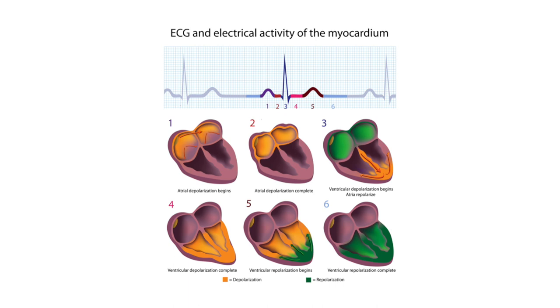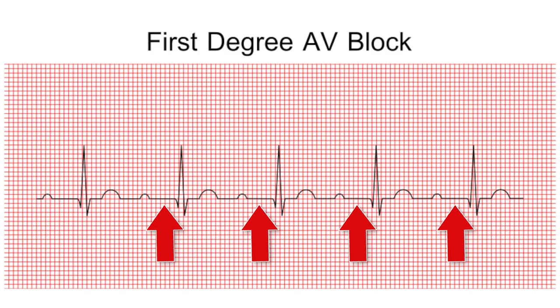Now let's look at an EKG and the electrical activity of the myocardium. The top portion of the photo is your normal P-Q-R-S-T waveform, color-coded and numbered one through five, with the numbers associated with the activity of the myocardium conduction below. When the heart image shows a yellow-orange color, it reflects depolarization; green represents repolarization. Item one: the P-wave represents the beginning of atrial depolarization. Item two: the PR segment, where atrial depolarization is complete — this is the conduction of the AV node. If the PR interval is prolonged, it can result in a first-degree AV block, as shown in the photo with that extended PR. If the PR is shortened, it can result in tachycardia.